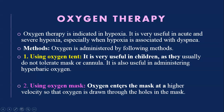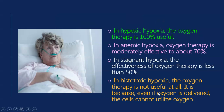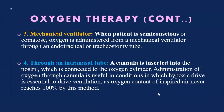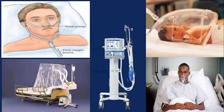The second method is using an oxygen mask, which is useful for adults. Oxygen enters the mask at a higher velocity so that oxygen is drawn through the holes in the mask. You can see this diagram: from the oxygen cylinder, air goes into the mask and then you are able to breathe.